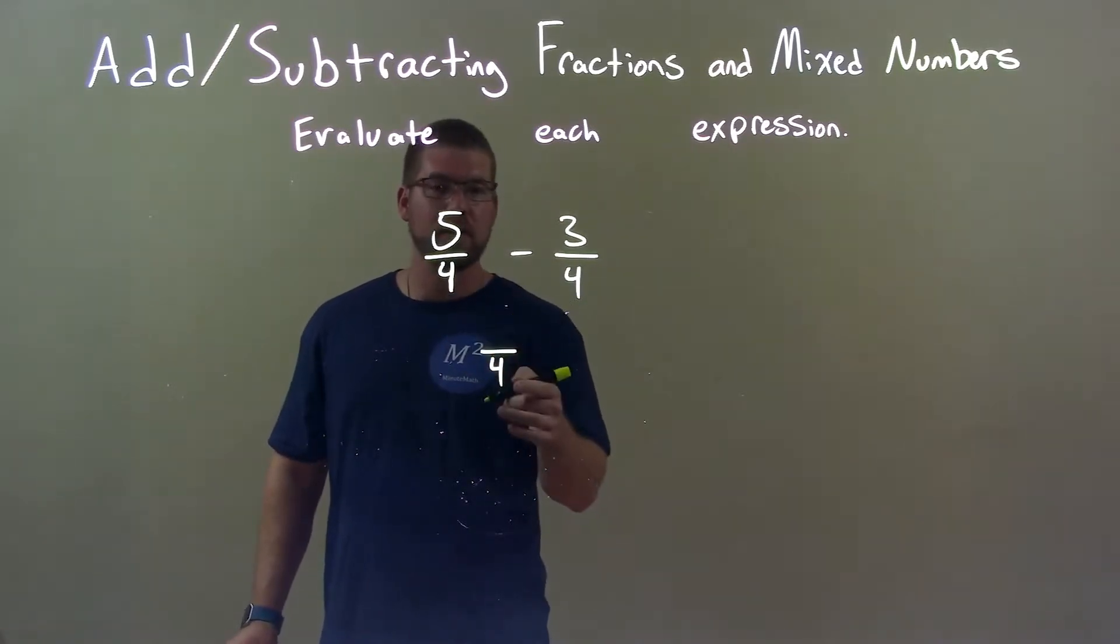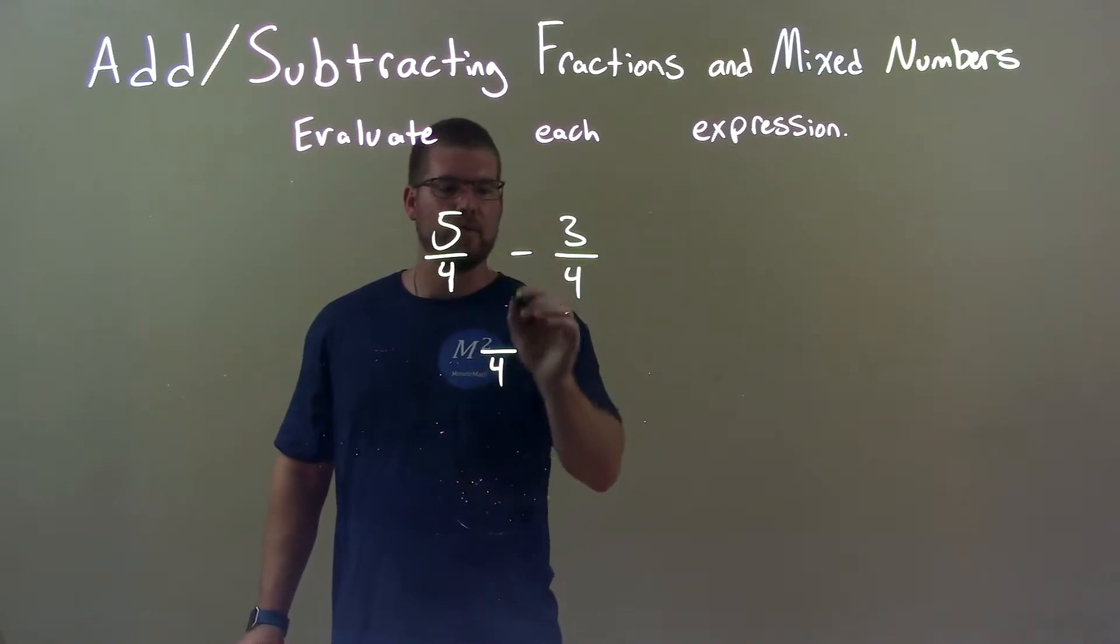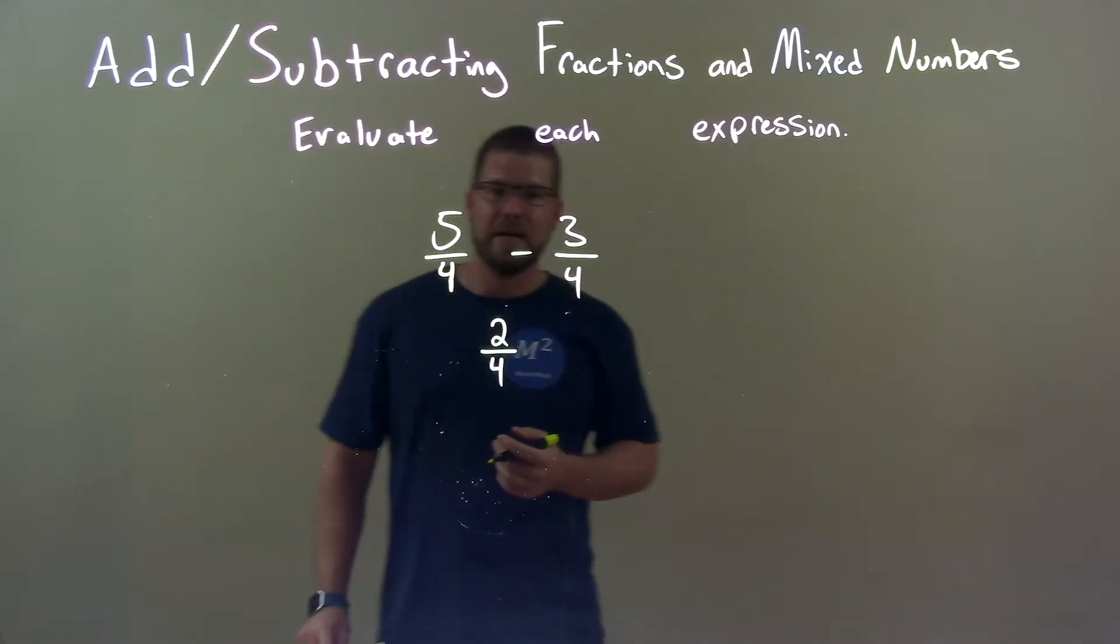So, 4 is still in our denominator. 5 minus 3, we just look across the top. 5 minus 3 is 2. So we have 2 fourths here.